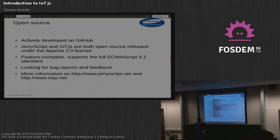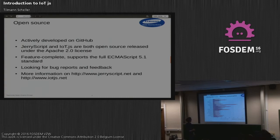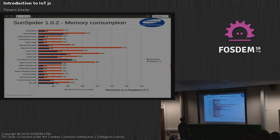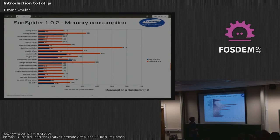To give you an impression of memory consumption, we have a slide running the SunSpider benchmark. The blue represents JerryScript and the red is Duktape. For those who haven't heard of Duktape, it's another open source JavaScript engine aimed at a really low footprint, though it targets a slightly higher segment than we do. As you can see, even the Duktape numbers are very low, but JerryScript still outperforms it by a significant margin. For some benchmarks, JerryScript needs just 36 kilobytes of RAM.